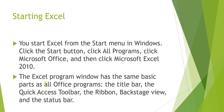Click on the Start button, then click on All Programs. In that you will get the Microsoft Office package, and in Microsoft Office you have to click on Microsoft Excel. The Excel program window has some basic parts like all Office programs: the title bar, quick access toolbar, the ribbon, the backstage view, and the status bar.